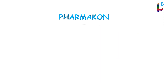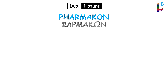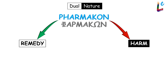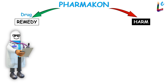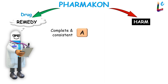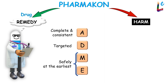The term 'pharmakon' in ancient Greek referred to something with a dual nature — that is, it can be both a remedy and a harm. The pharmacologist wants the drug to be a remedy. He would wish that absorption is complete and consistent, distribution is exclusively into target tissues, and once the desired effect is achieved, the drug be eliminated safely at the earliest.